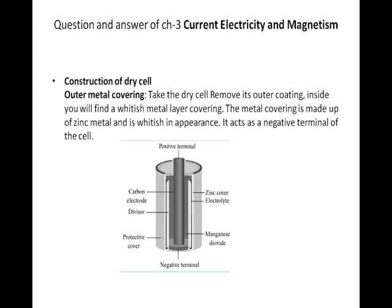After that you will discuss one or two lines about all the parts. First is the outer metal covering. Take the dry cell and remove its outer coating — inside you will find a whitish metal layer covering. The metal covering is made up of zinc metal and it is whitish in appearance. It acts as the negative terminal of the cell. The outermost layer is negatively charged, silver-white in color, and the metal covering is made up of zinc metal.